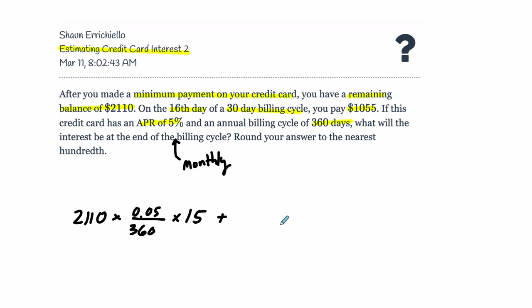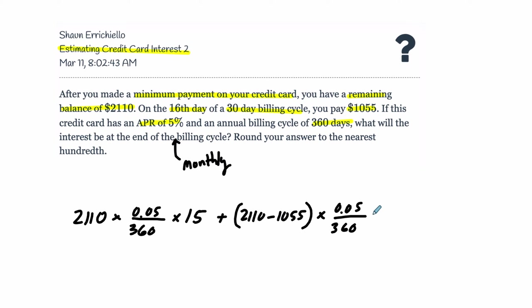Then something changes. In the second half of the billing cycle, you make a payment. So you take the $2,110 and subtract $1,055, and that leftover amount is multiplied by the same daily interest rate — 0.05 over 360 — times 15 days. Now this is a very precise calculation, but it's still called estimating, because this is really just a simple interest equation. Simple interest and compound interest over the course of a month are really, really close.